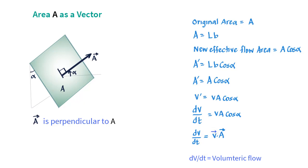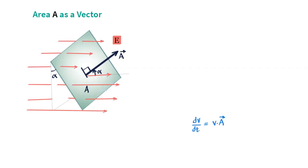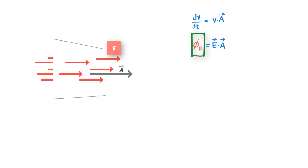We could use pretty much the same analogy to describe electric flux. All you need to do is use vector E in place of V, and the symbol we use for electric flux is phi with E in the subscript.